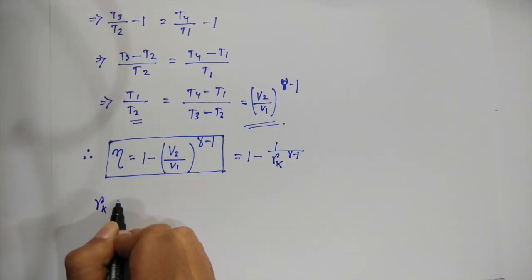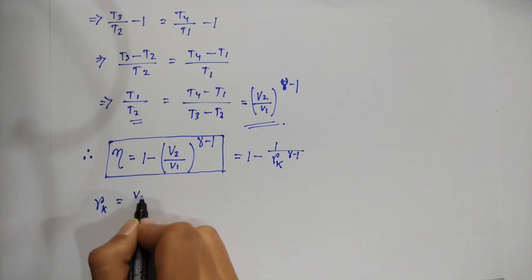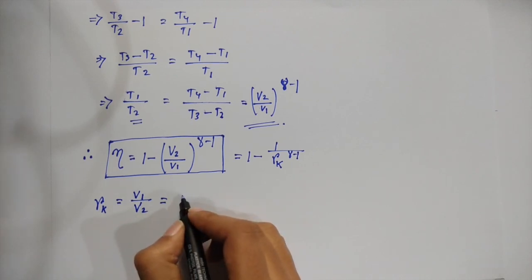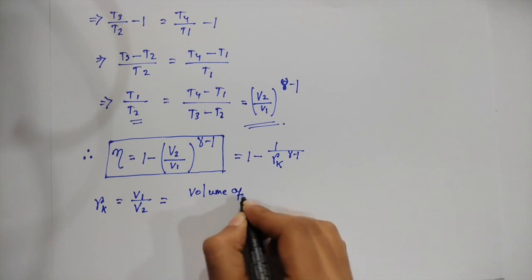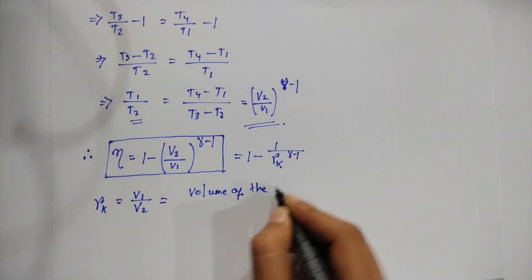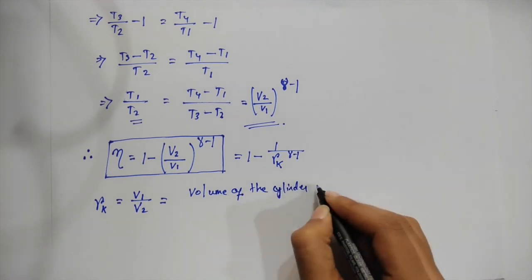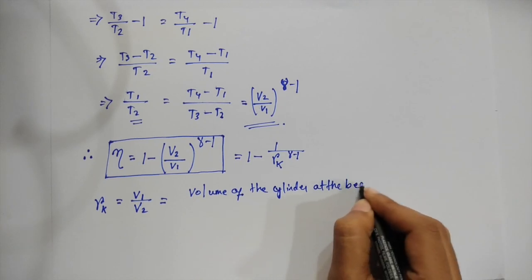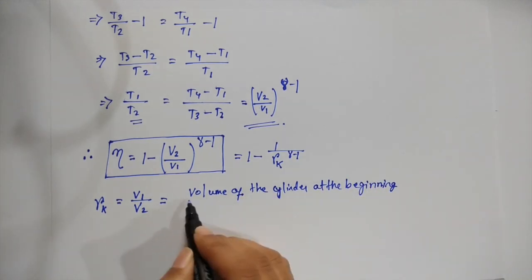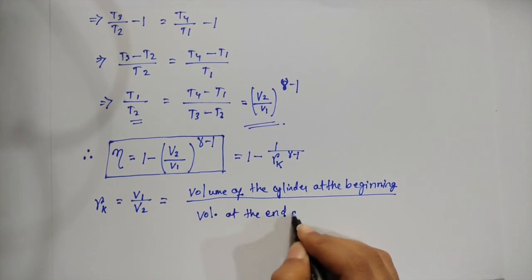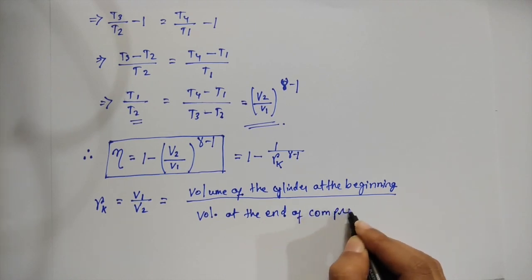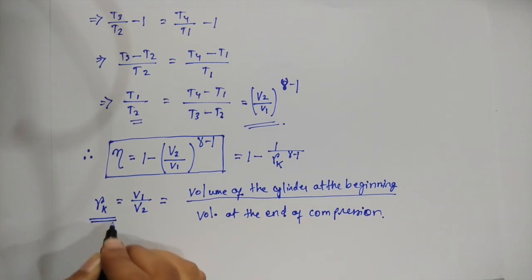That is equal to V1, the volume of the cylinder at the beginning, divided by volume at the end of compression. This term is an important term known as compression ratio. So this is how we can get the final equation of the efficiency for Otto cycle.